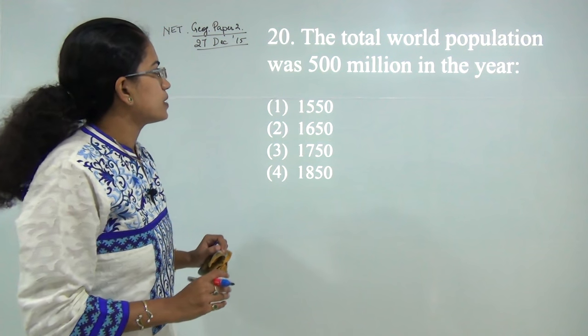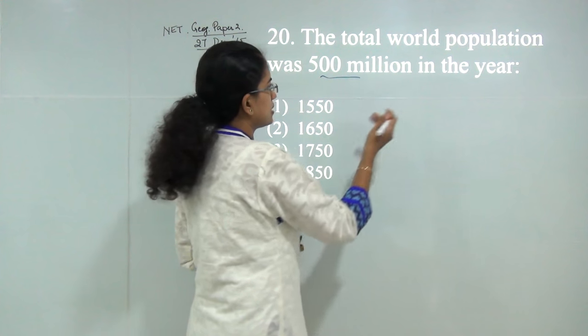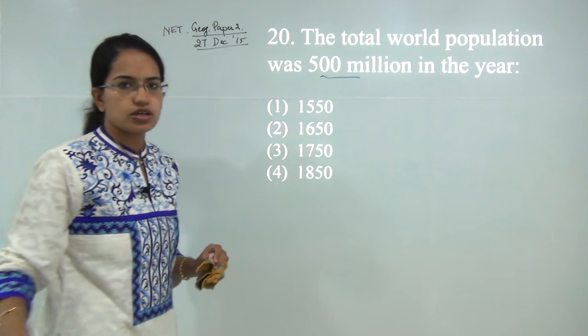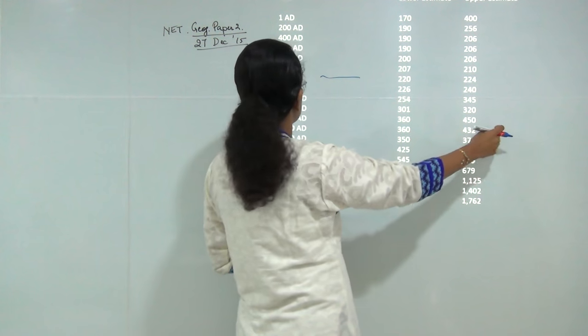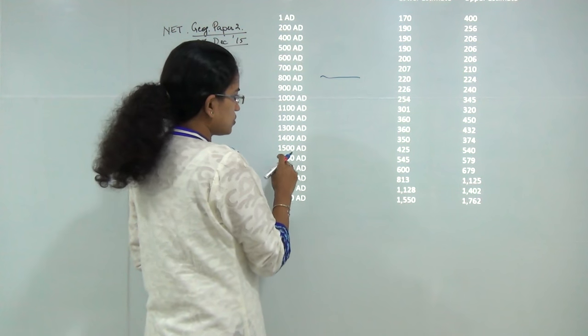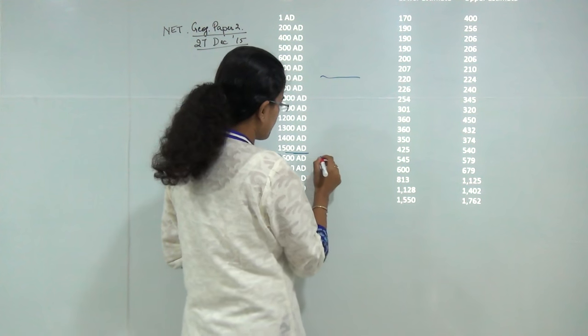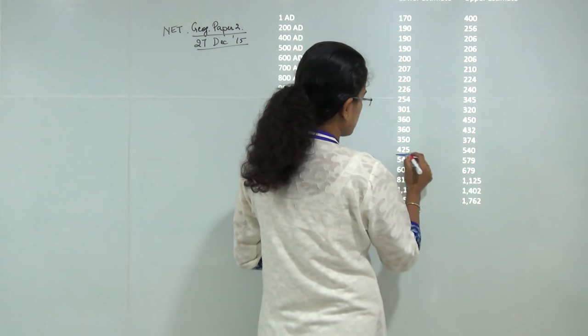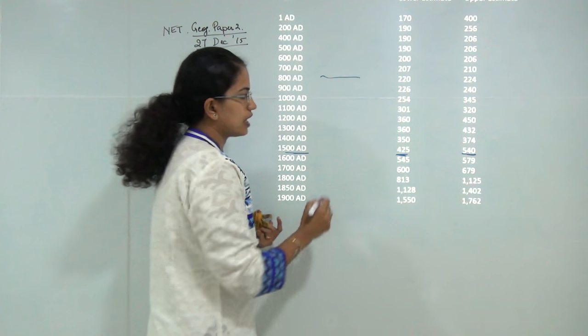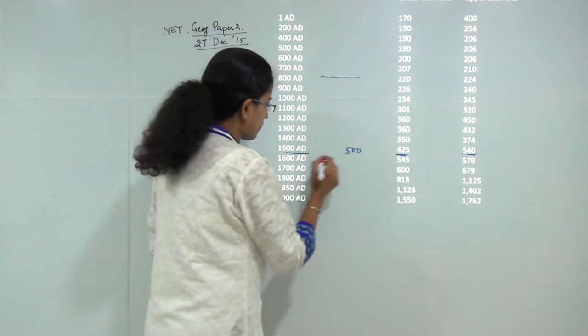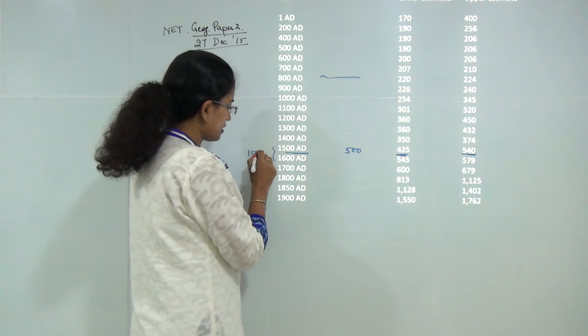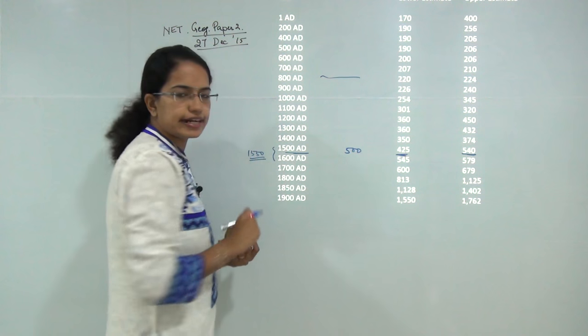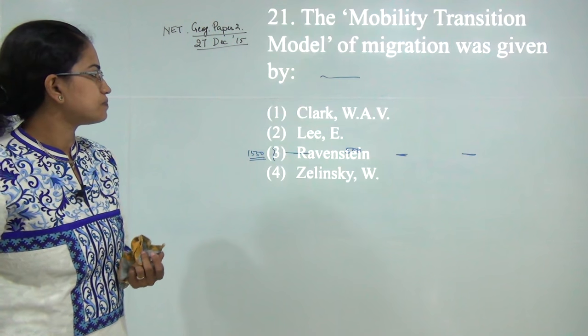Next: the total world population was 500 million in the year? This is directly based on knowledge. You have data for various ADs with lower and upper estimates. At around 1500 AD, it's from 425 to 540 million. The question asks about 500 million, so between 1500 and 1600, I can say 1550 would be the correct answer.